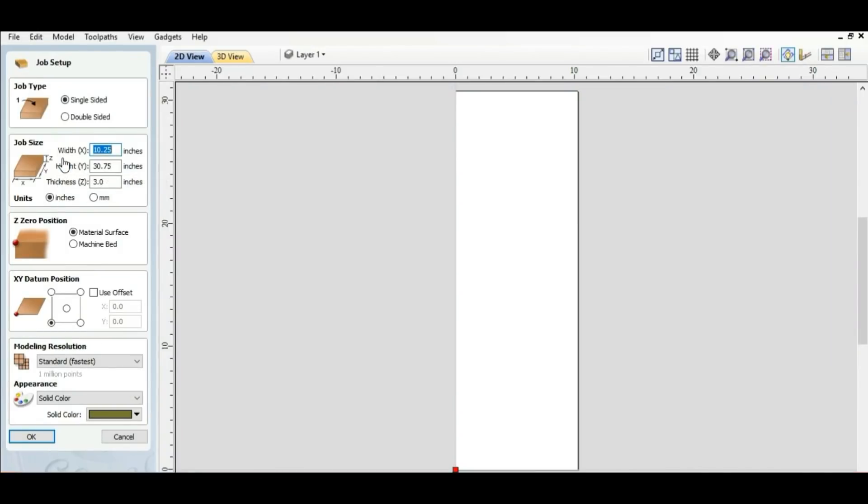Here we are at the homepage of Aspire. We're going to create a new file. I've already put the measurements in here and I want just a tiny bit bigger than what it really is because I want to make sure the whole thing gets milled. So I put 10 and a quarter, 30 by three quarters and it's three inches thick right now. We're going to go off the material surface and we're going to go in the lower left hand corner for the X and Y.